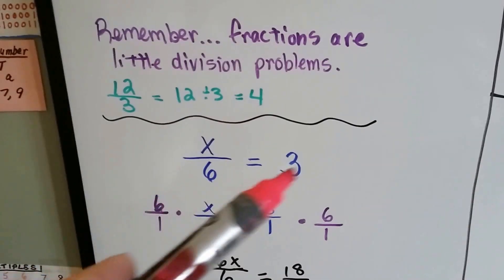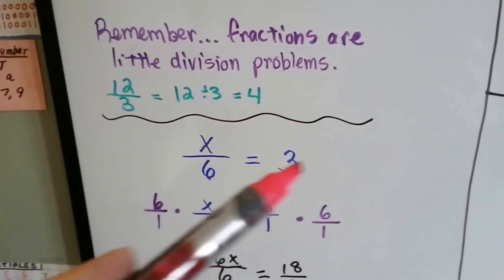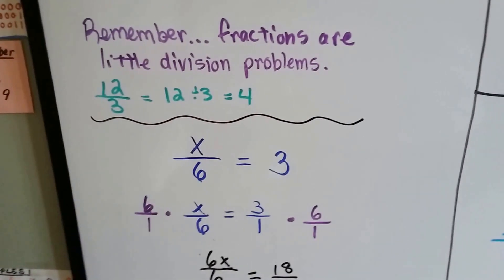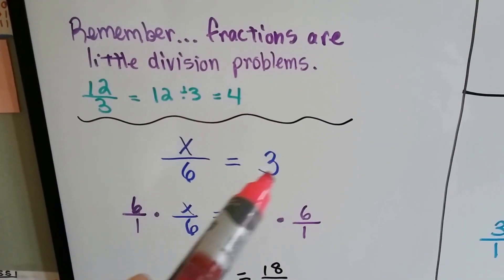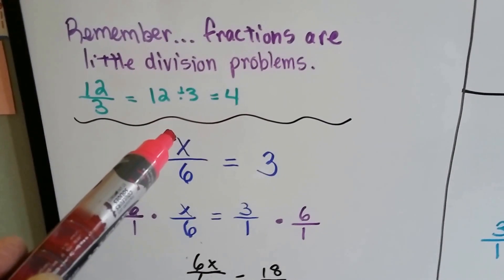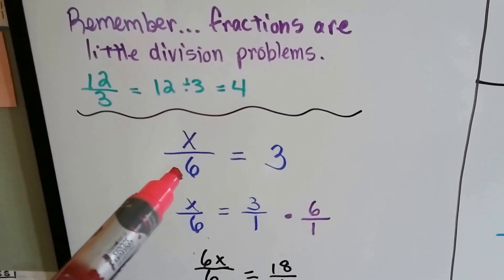Now I know that some of you say we could just multiply these. I know we can multiply 6 times 3 and get 18, and that would be the answer. But that is what we're doing.